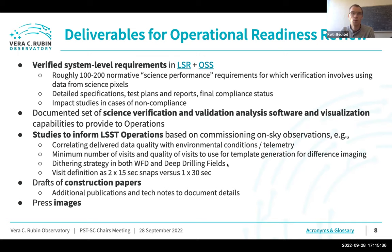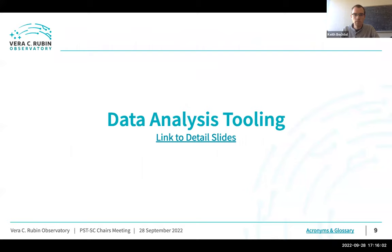Other deliverables include drafts of construction papers — journal papers that describe at a high level the overall delivered performance of the Rubin system — supplemented by additional tech notes going into more detail, and press images to share how exciting our data is with the general public.